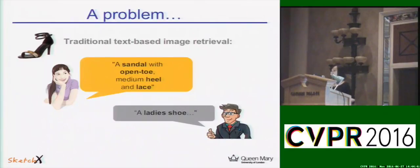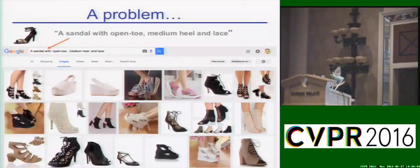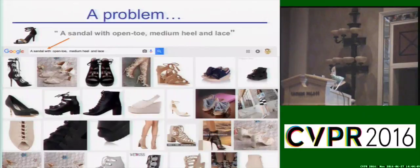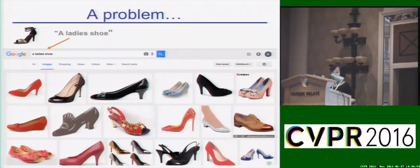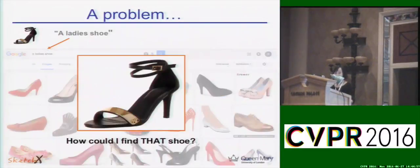Let's see the results when I type the description into Google Image. My shoe was not on the first page, not the second, not the third. Bob also tried to help — but without success. So how could I find that specific shoe rather than just any shoe?